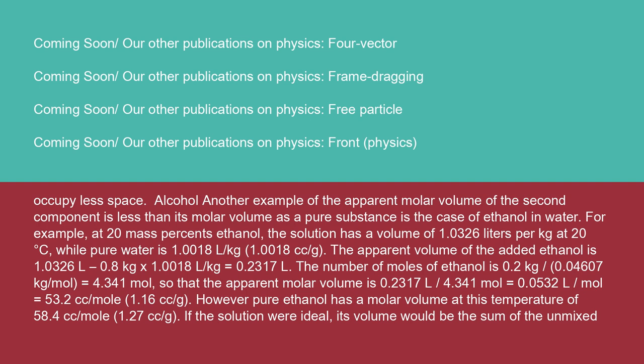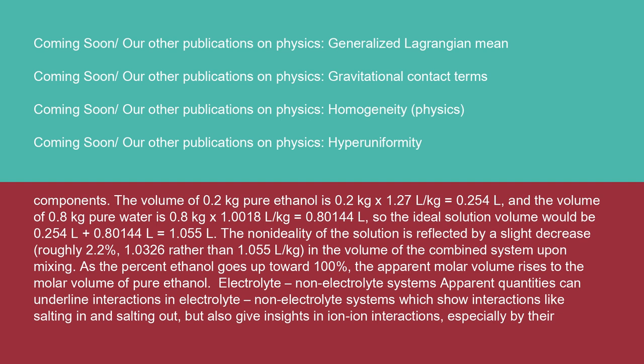The apparent volume of the added ethanol is 1.0326 L − 0.8 kg × 1.0018 L/kg = 0.2317 L. The number of moles of ethanol is 0.2 kg / 0.04607 kg/mol = 4.341 mol, so the apparent molar volume is 0.2317 L / 4.341 mol = 0.0532 L/mol = 53.2 cm³/mol (1.16 cm³/g). Pure ethanol has a molar volume of 58.4 cm³/mol (1.27 cm³/g). As the percent ethanol goes toward 100%, the apparent molar volume rises to the molar volume of pure ethanol.